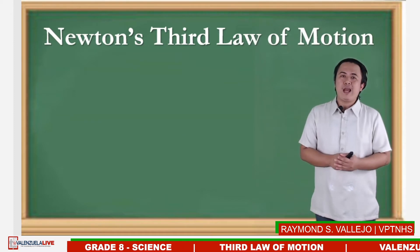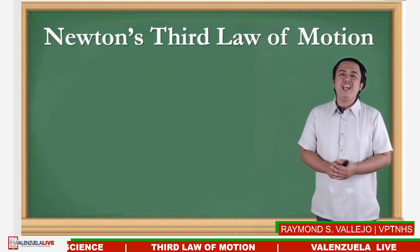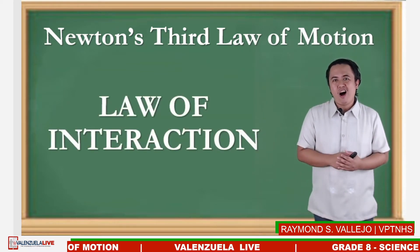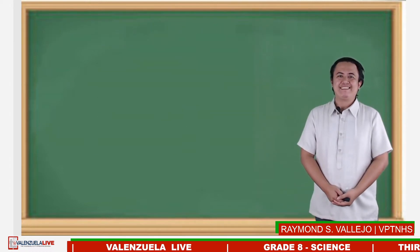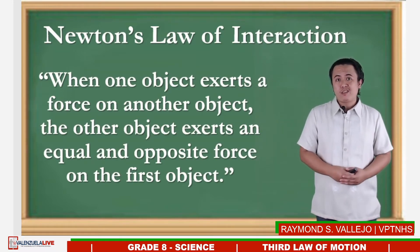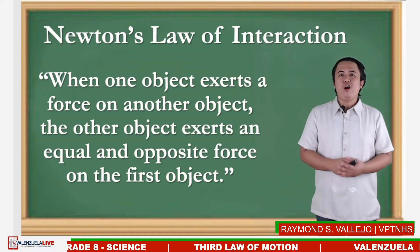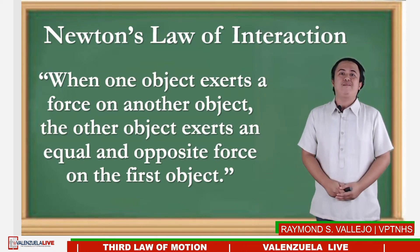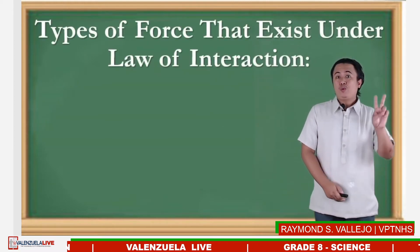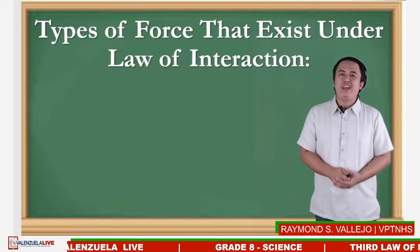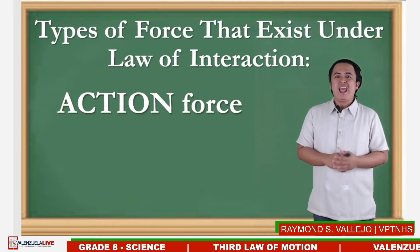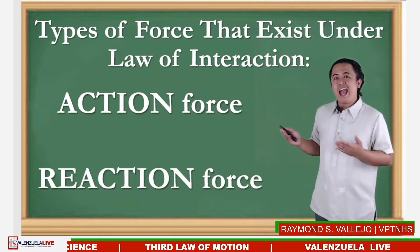Newton's third law describes the relationship between two forces in an interaction. That is why it is known as the law of interaction. The law of interaction states that when one object exerts a force on another object, the other object exerts an equal and opposite force on the first object. Two types of force exist under the law of interaction: the action force and the reaction force.